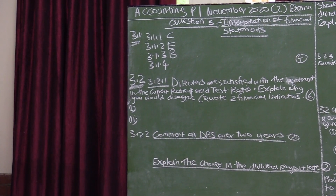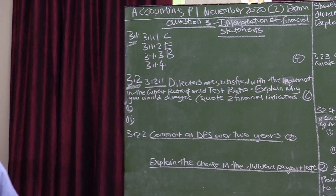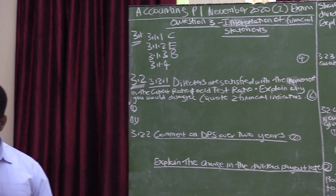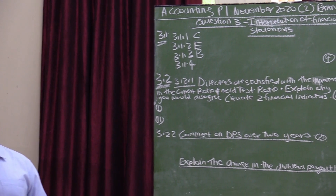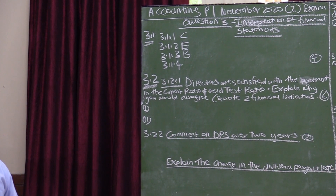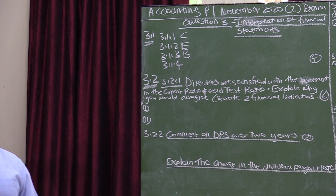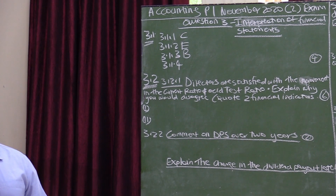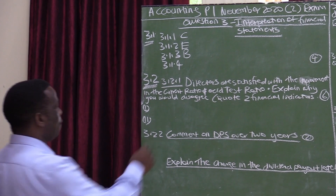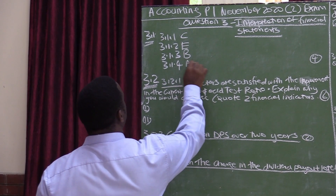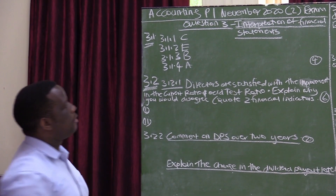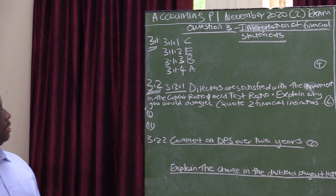3.1.4 is operating efficiency — is the business managing expenses effectively to increase profitability? So the best option for 3.1.4 is option A, which says: is the business managing expenses effectively to increase profitability? That is 3.1.4, and the answer is A.